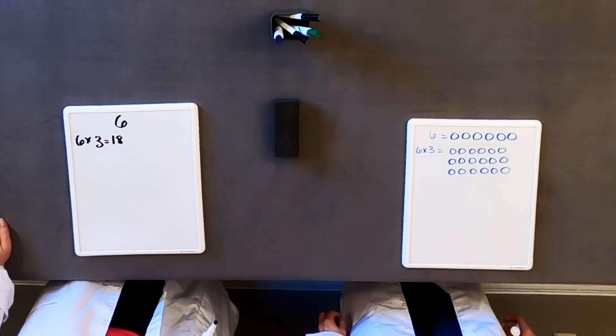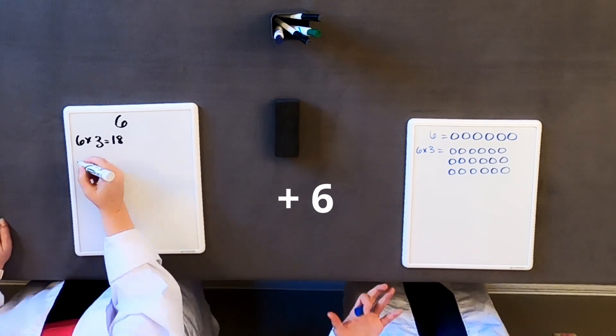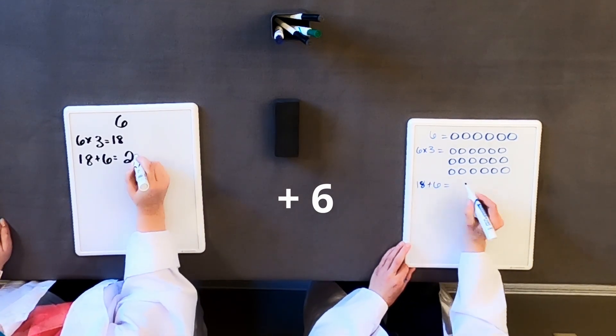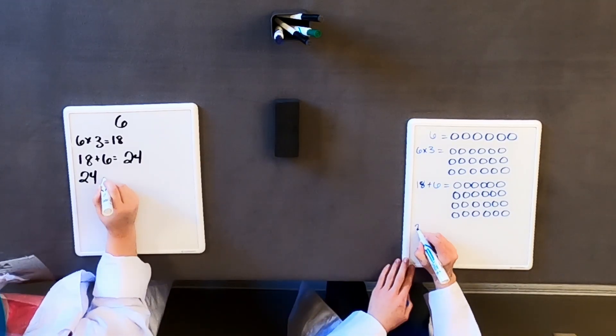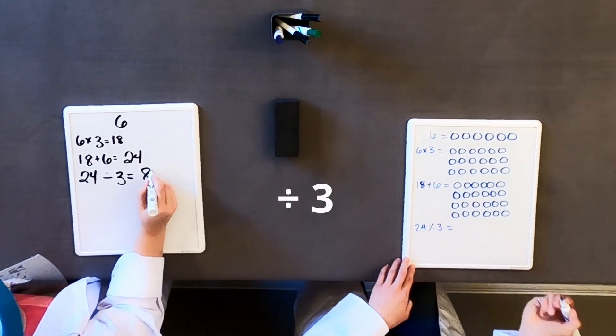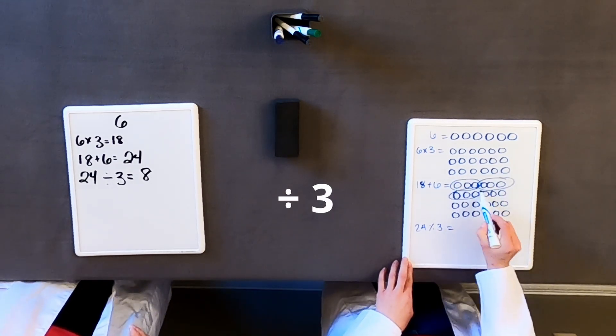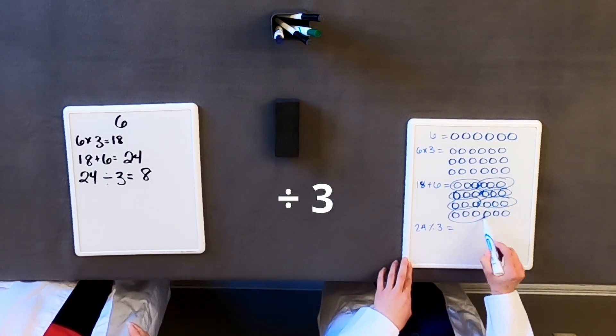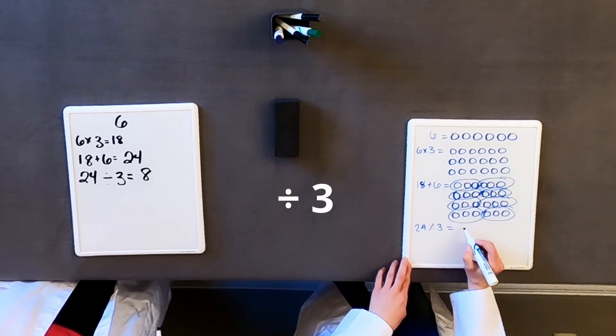So the next step that we did is we added 6 onto this 18. Okay. So we added 6 more. 6. Okay. So we are going to do that. We're going to take 24 divided by 3 and we get 8. So let's see. We got one group here and here. So there's two groups of 3 in every row. And then 1, 2, 3, 4, 5, 6, 7, 8 groups. Perfect.